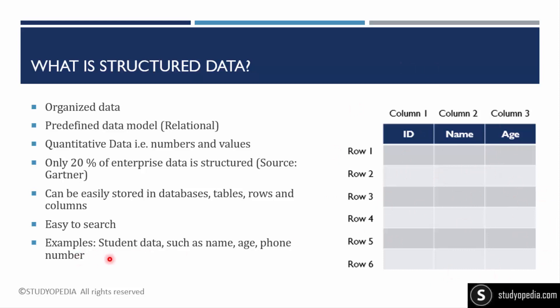Examples of structured data include student data, college data, and company data — such as the names of employees, their age, phone number, address, department, and other similar fields. All of this comes under structured data.